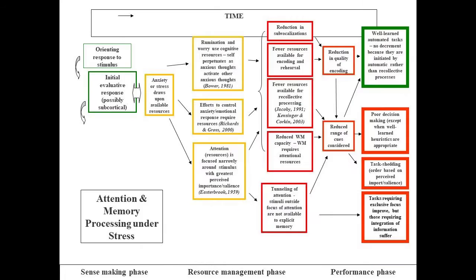When we break it down to just an anxiety-related stress reaction, we can follow the cascade of information processing breakdowns leading to attentional tunneling, a reduction in cue sampling and memory encoding, and ultimately in performance outcomes.